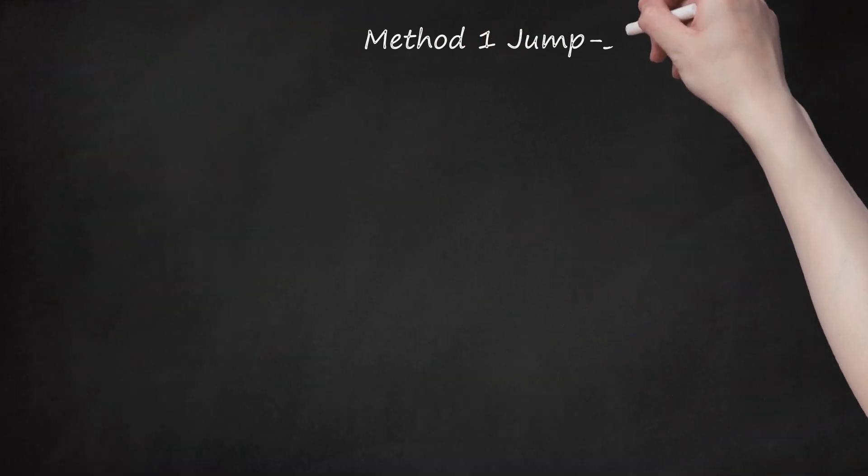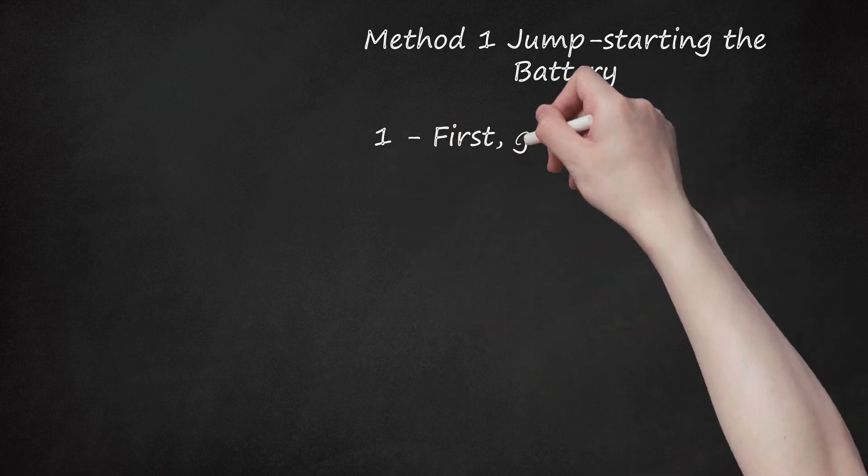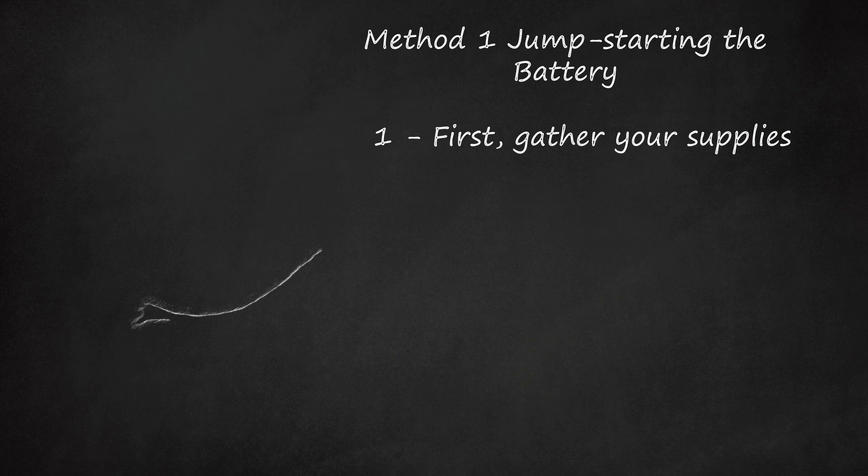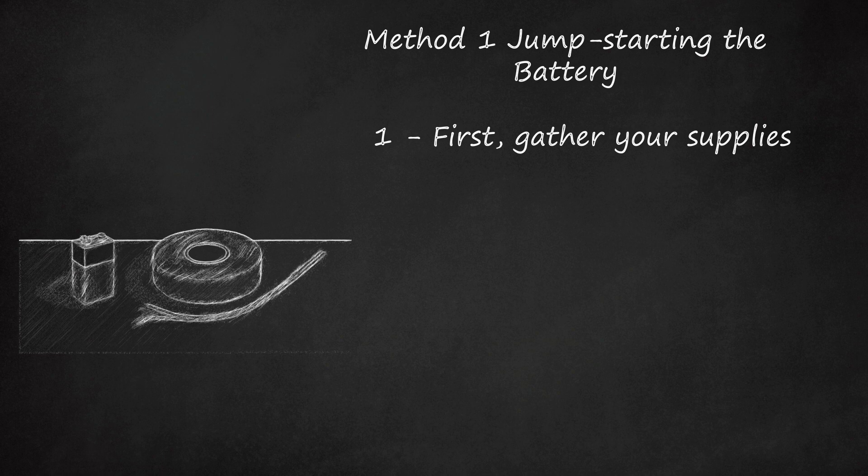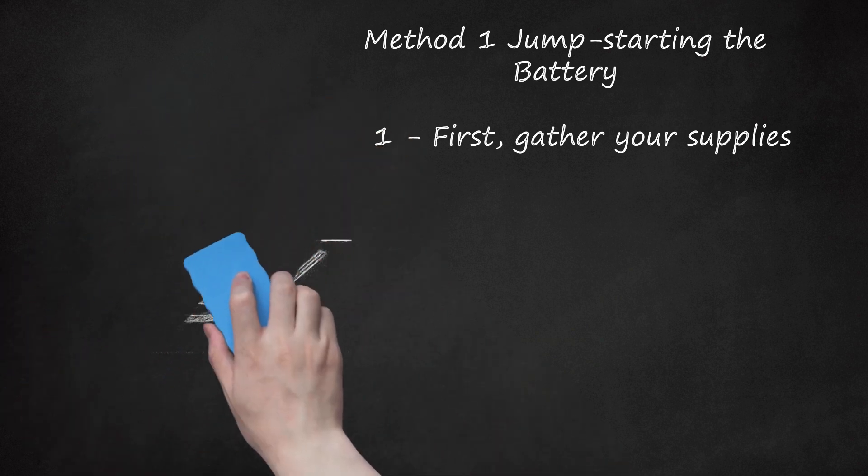Method 1: Jump-starting the battery. First, gather your supplies. You'll need the following: a 9-volt battery (any brand will do), electrical tape (you'll need no more than 5 inches), electrical wire (basic thin electrical wire will do, red and black are preferred).